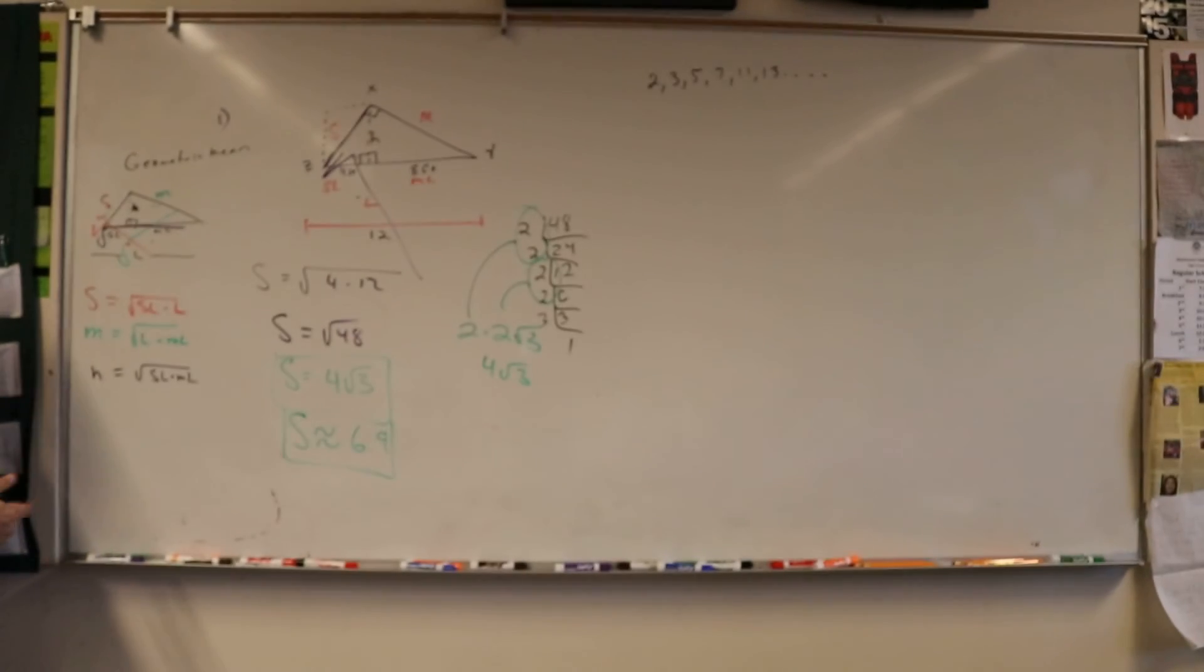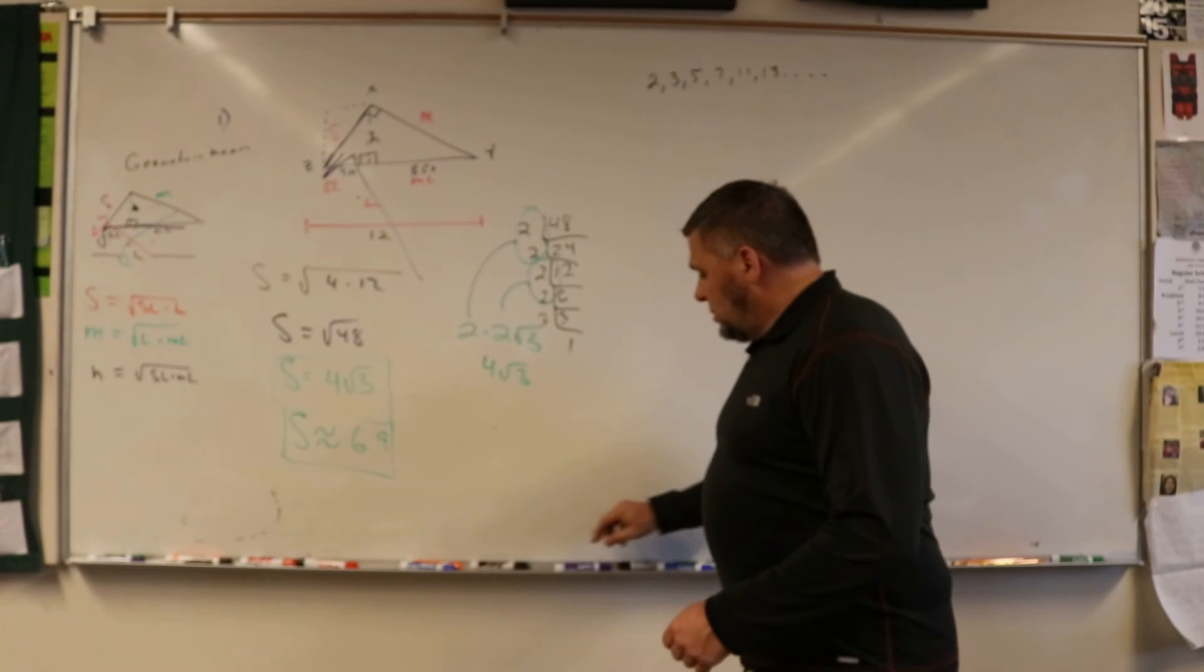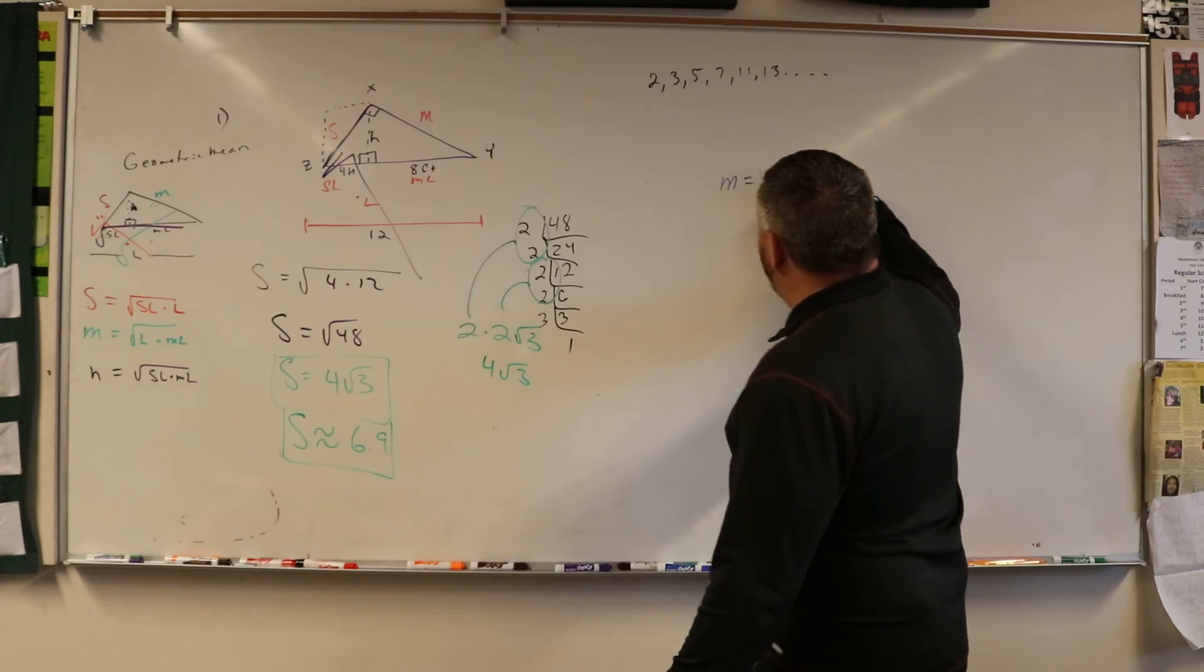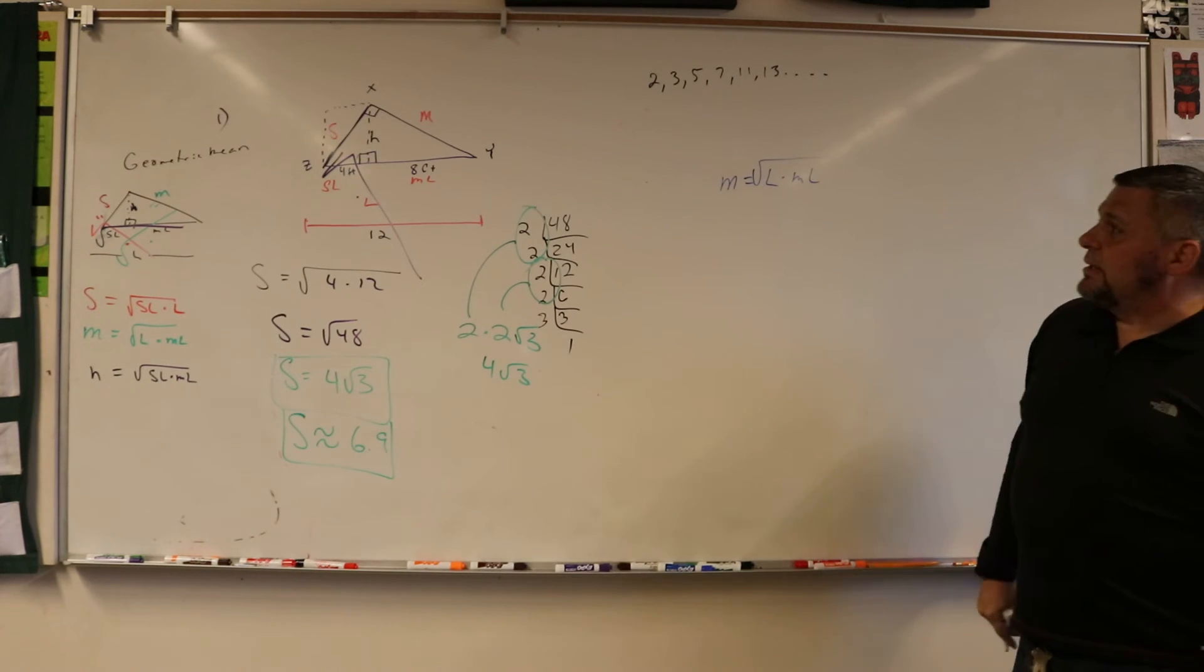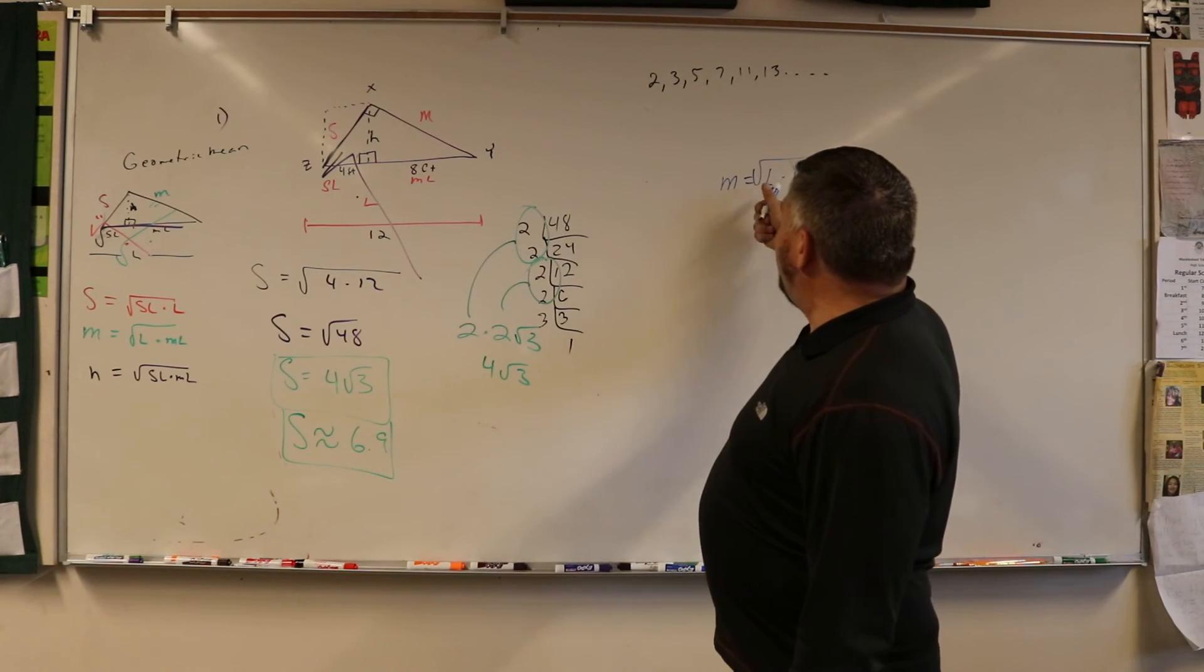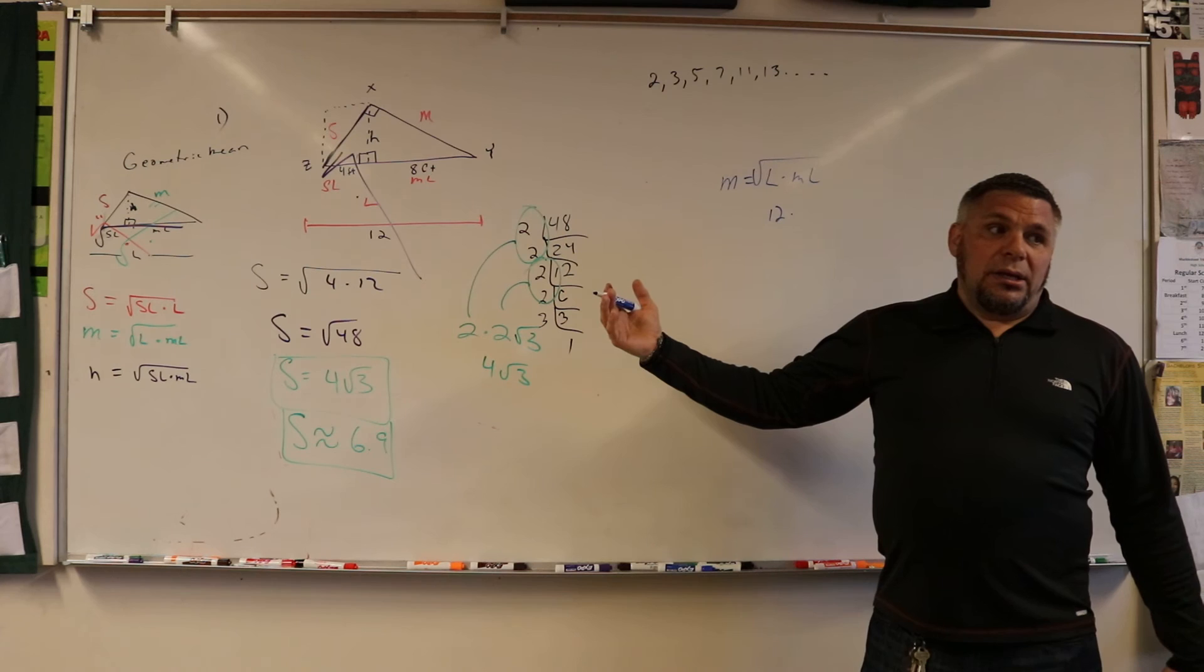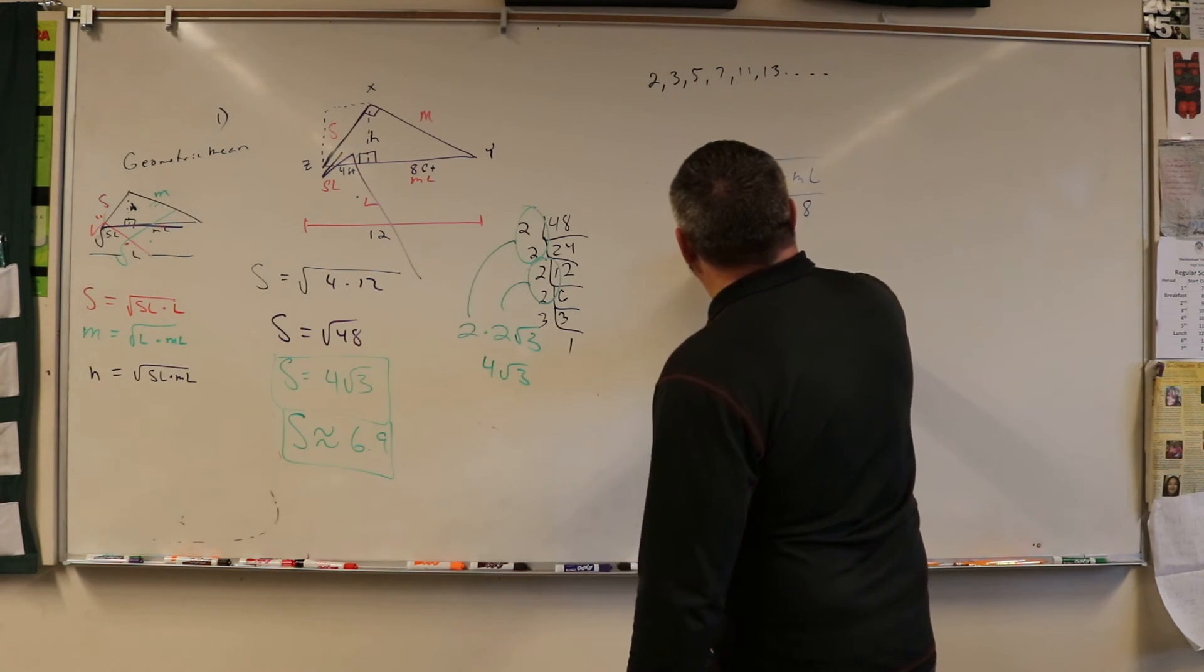Now we can find any of them. What I want to do is find the M and the H just so you know how to find all of them since we're doing the video. How would I do the M? M is equal to L times ML, square rooted of course. So that would be the L, 12 times 8.